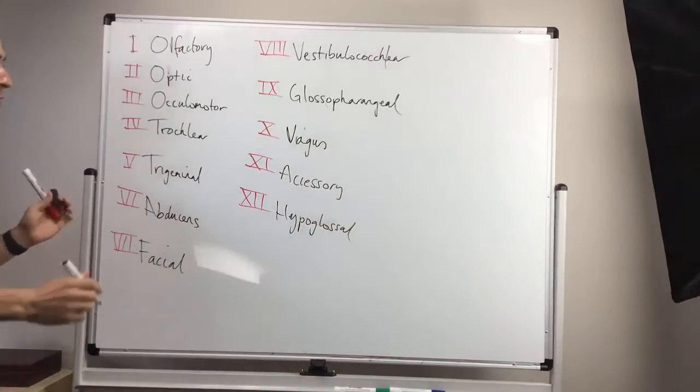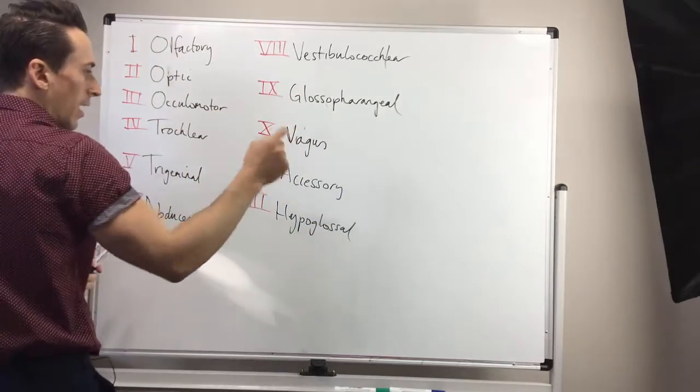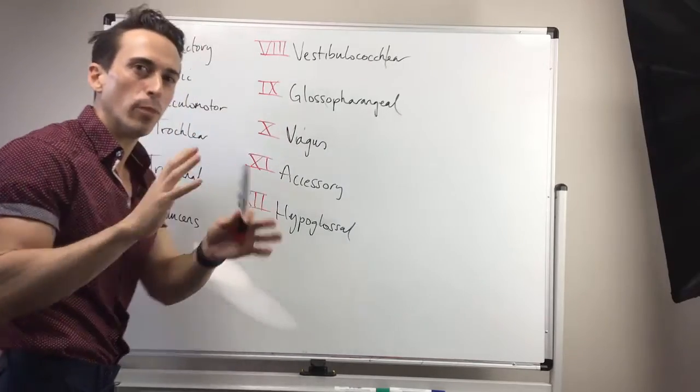What we have now are the 12 pairs of cranial nerves. O O O to touch and feel very good velvet are heaven. Now, how do you remember whether they are sensory or motor?